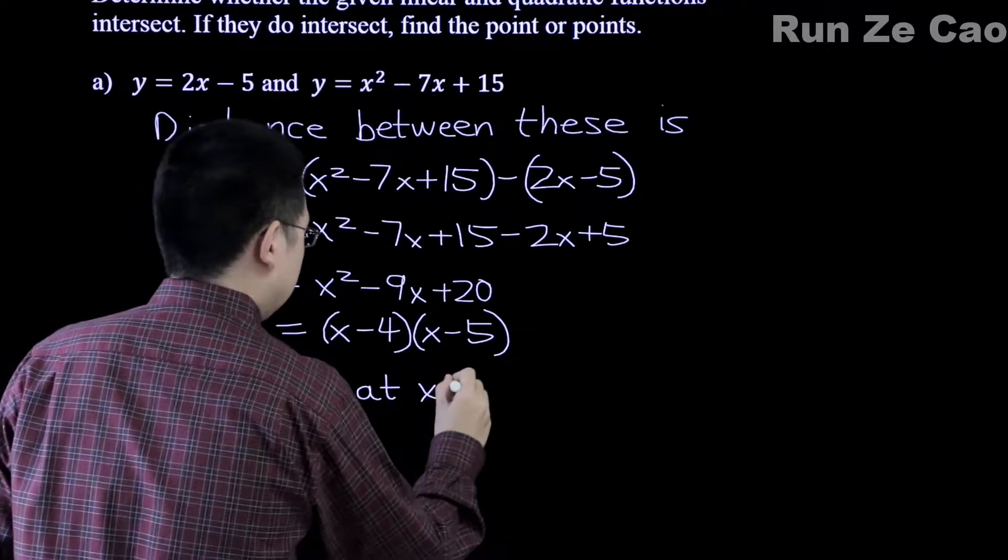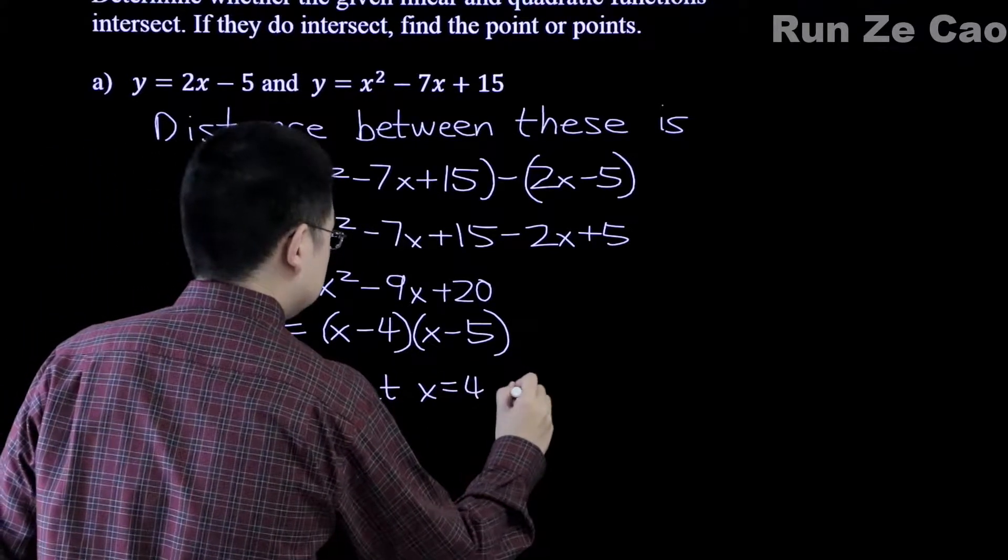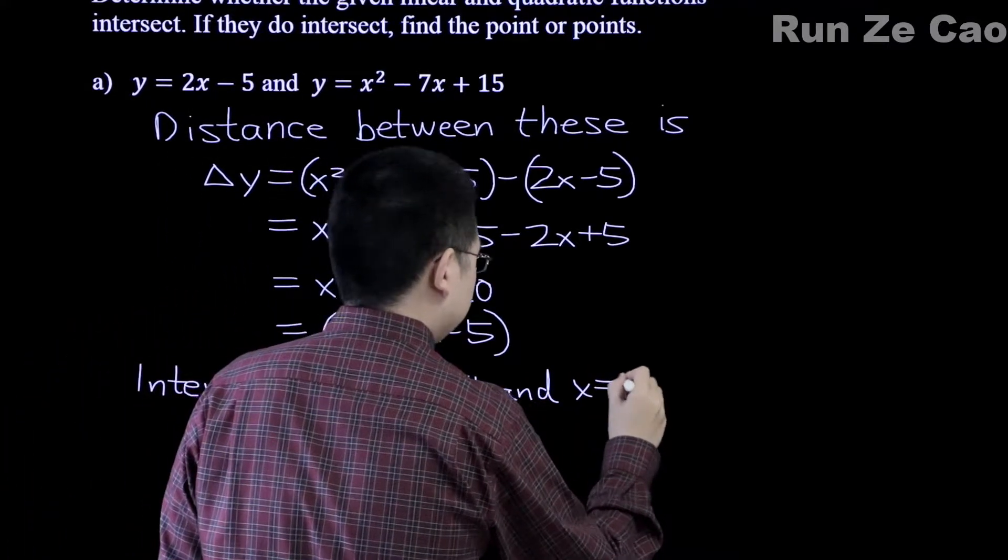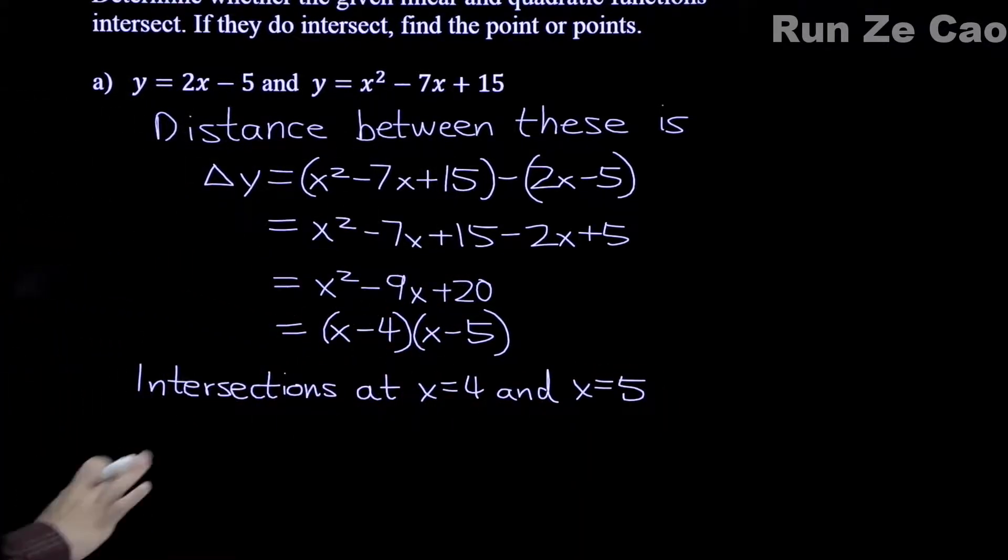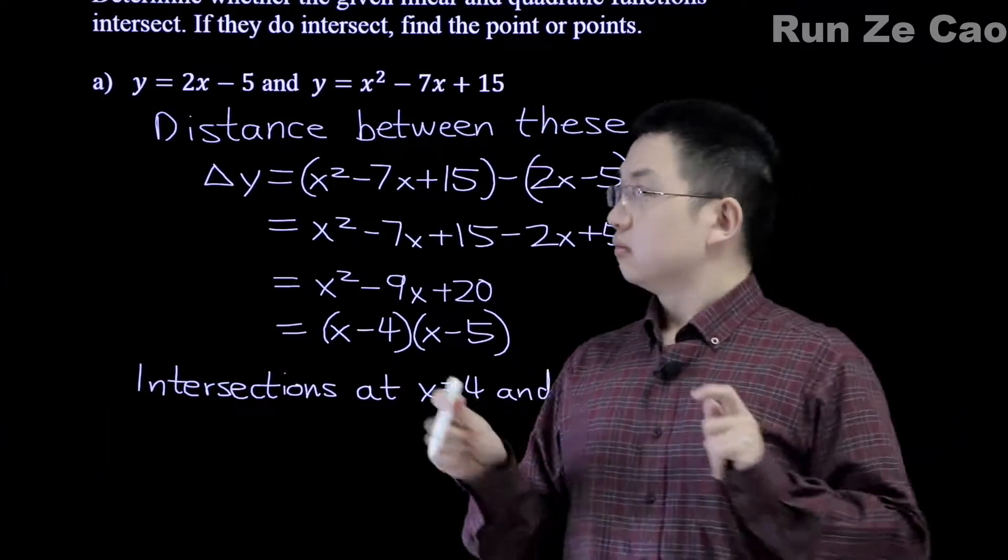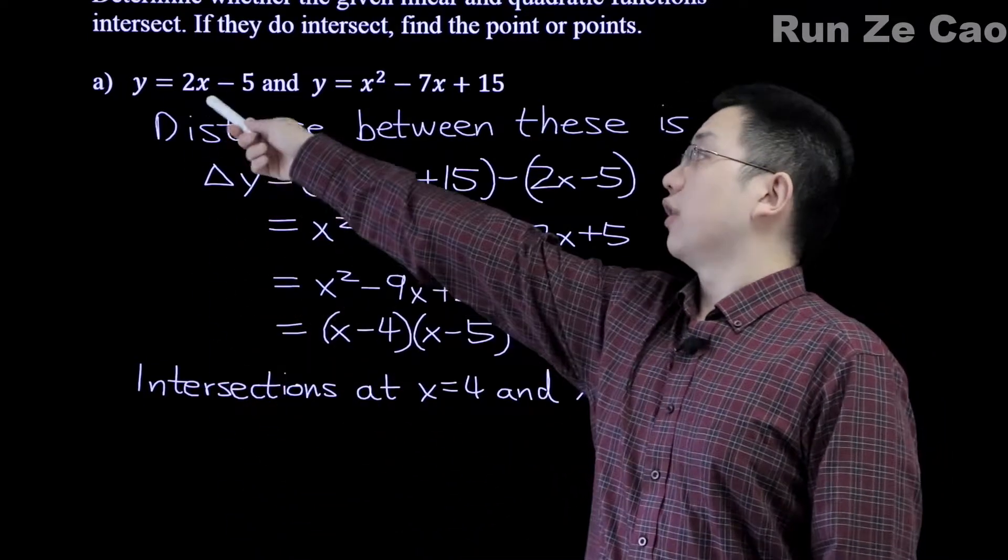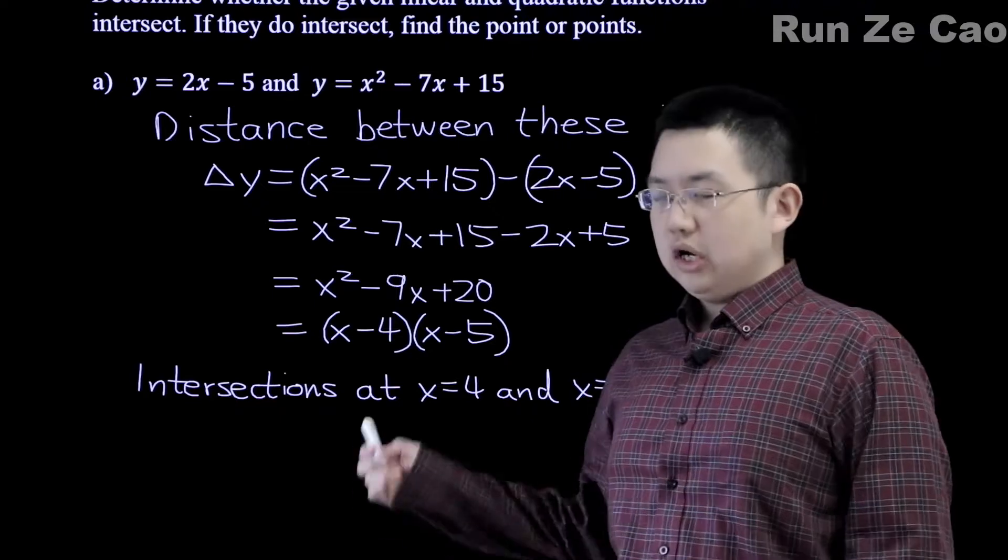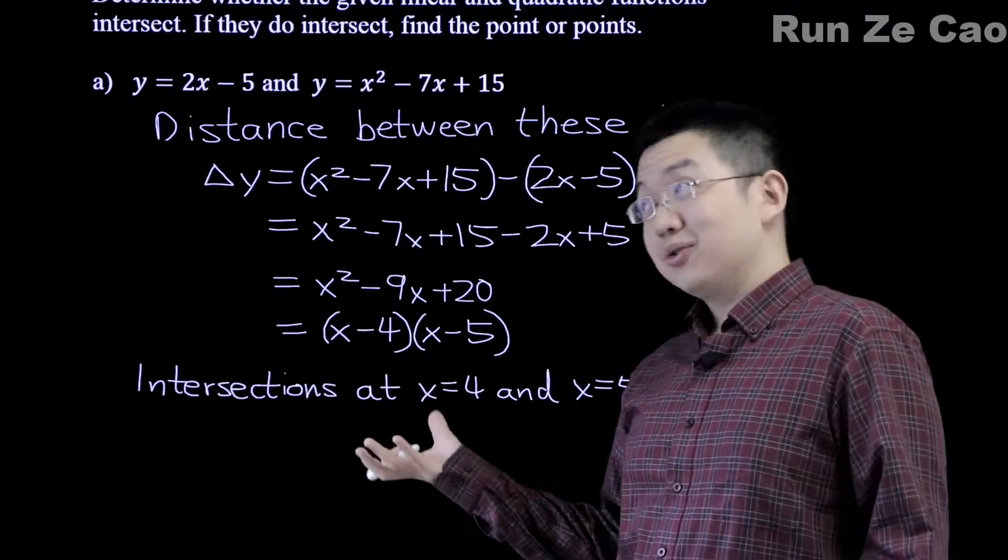Intersections at x equals 4 and x equals 5. Hey, we don't know what the y values are, do we? Well, what do we have here? We know that these points are going to be on this line. We also know that they're going to be on this curve. Which one do you think we're going to substitute into? Yeah, sounds pretty obvious. We're going to substitute into this line because we don't want to have to square anything - we're lazy.